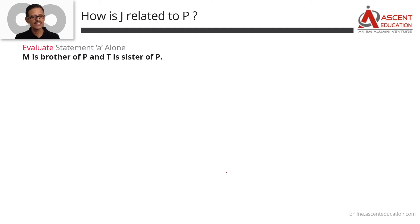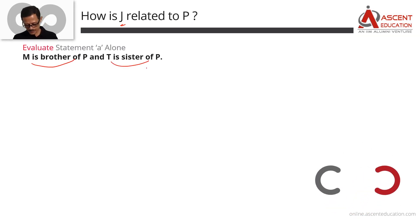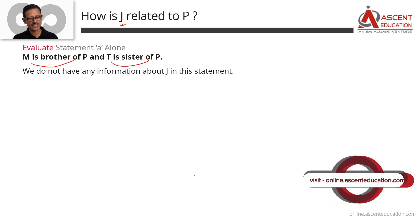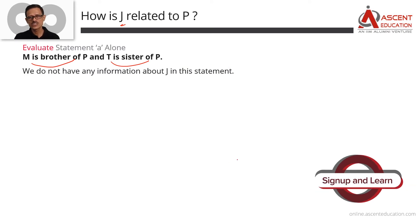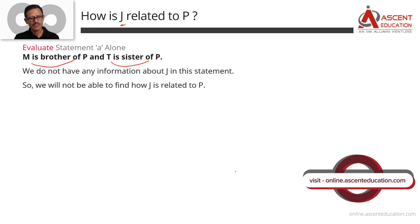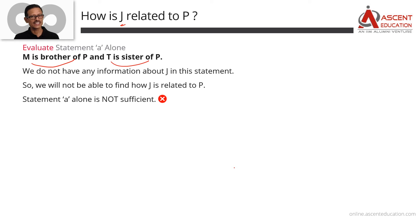Let's start with Statement A: 'M is the brother of P. T is the sister of P.' The question is: how is J related to P? This statement has no information about J at all, so we cannot answer how J is related to P. Therefore, Statement A alone is not sufficient. We eliminate answer option 1.